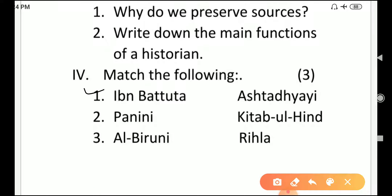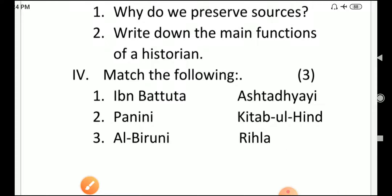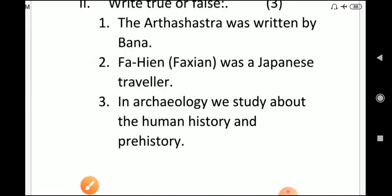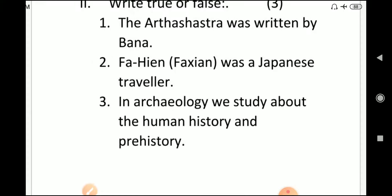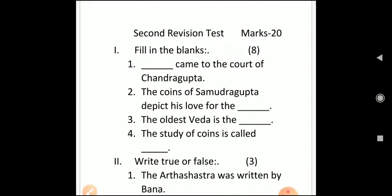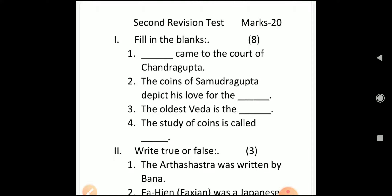Your last question is match the following. The options are Ibn Battuta, Panini, and Albiruni. You have to match them correctly. This test paper is based on lesson number two. The revision test of lesson number one I have already taken; now this is the revision test paper of lesson number two.